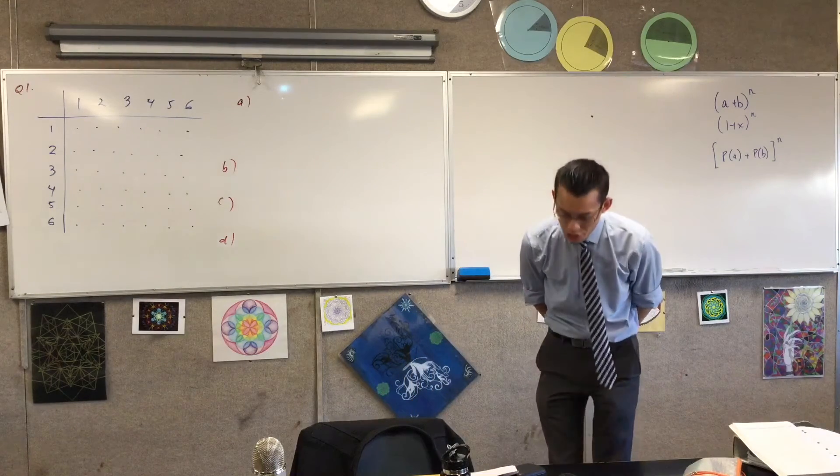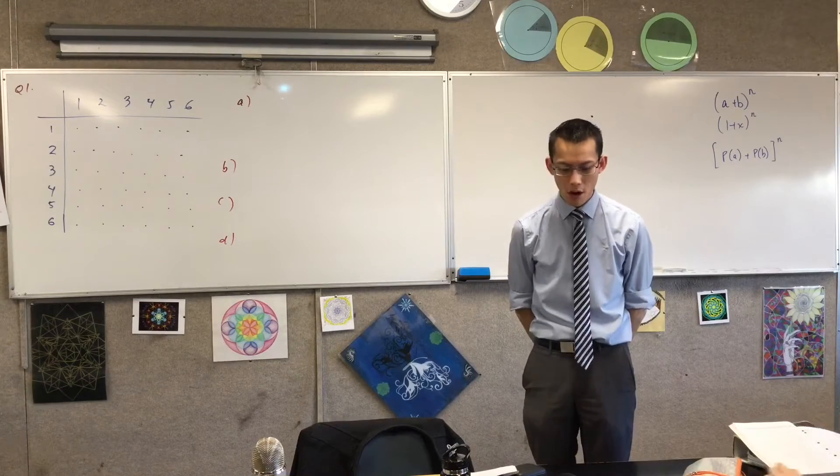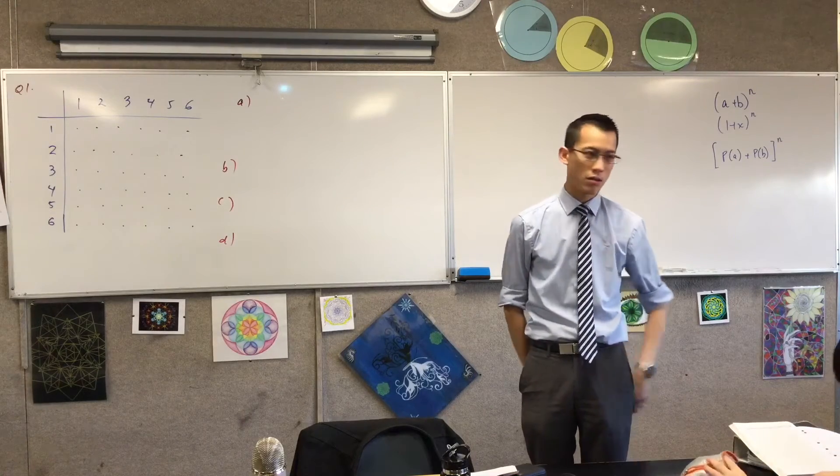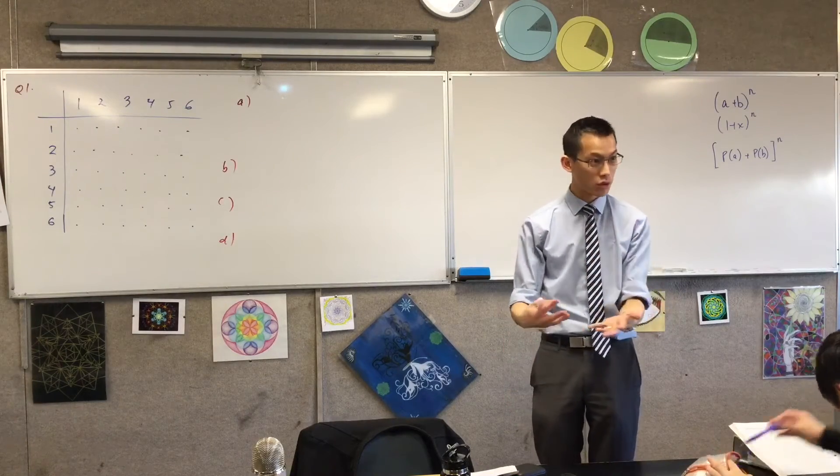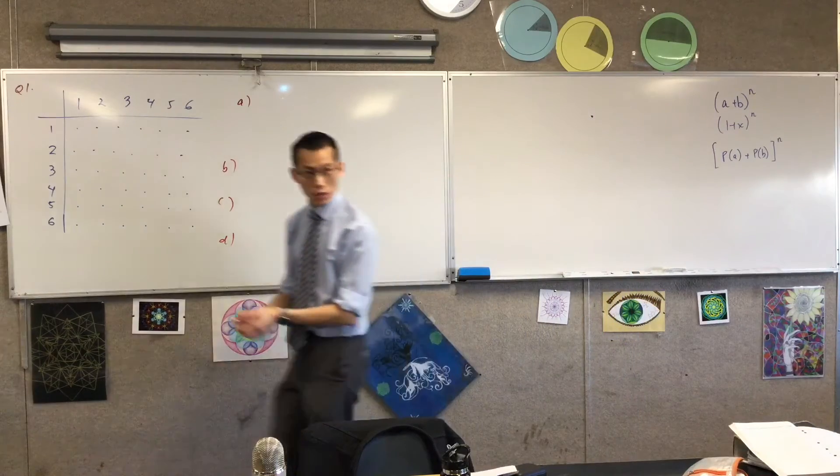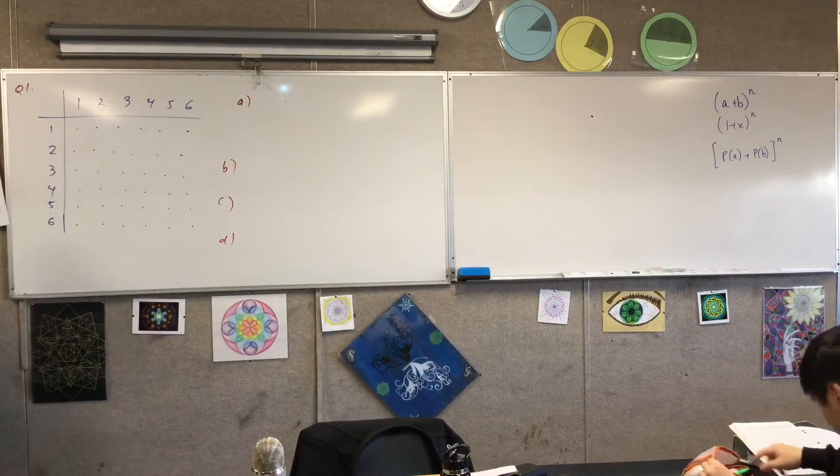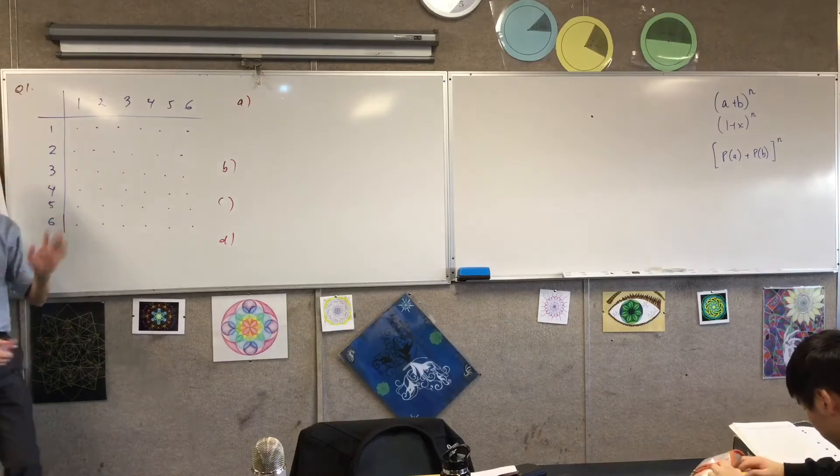So number one, what's the probability that a one or two will be on an upper face? So we don't worry about whether there's going to be multiple of them or not. So have a look at your diagram.